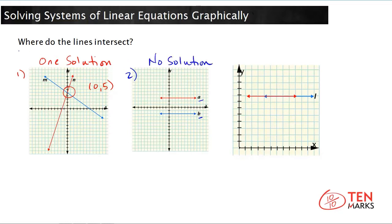Let's look at the last example. There are two lines here — one is red and one is blue — and they completely overlap each other. That means they're actually the same line. And if they're the same line, they will share every single point together, which means this situation has infinite solutions.